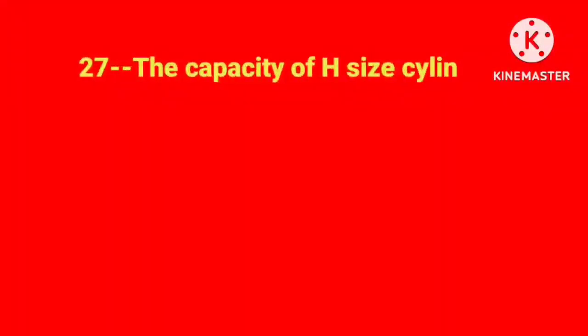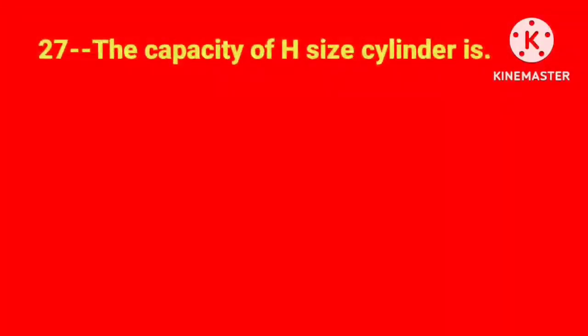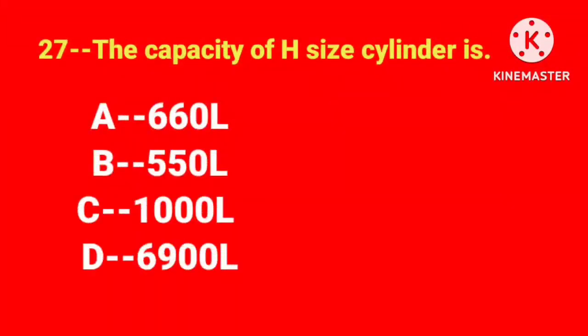Question number 27. The capacity of H-size cylinder is. Correct answer is option D, 6,900 liters.